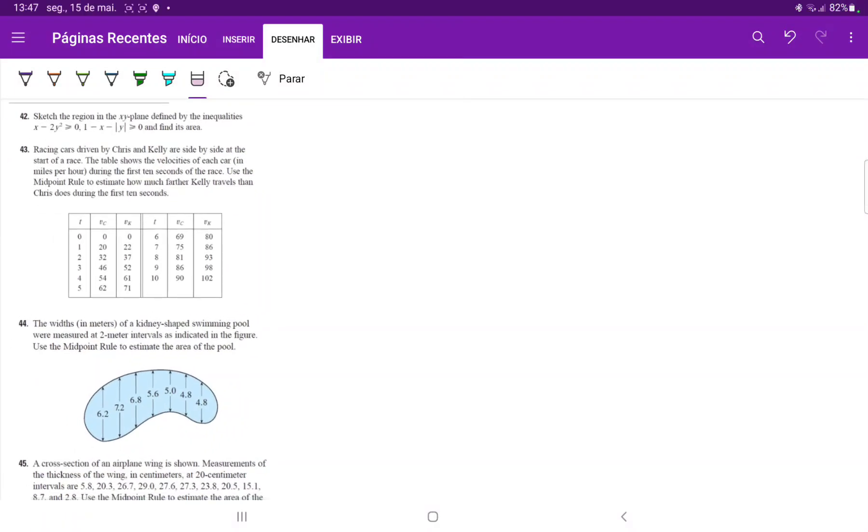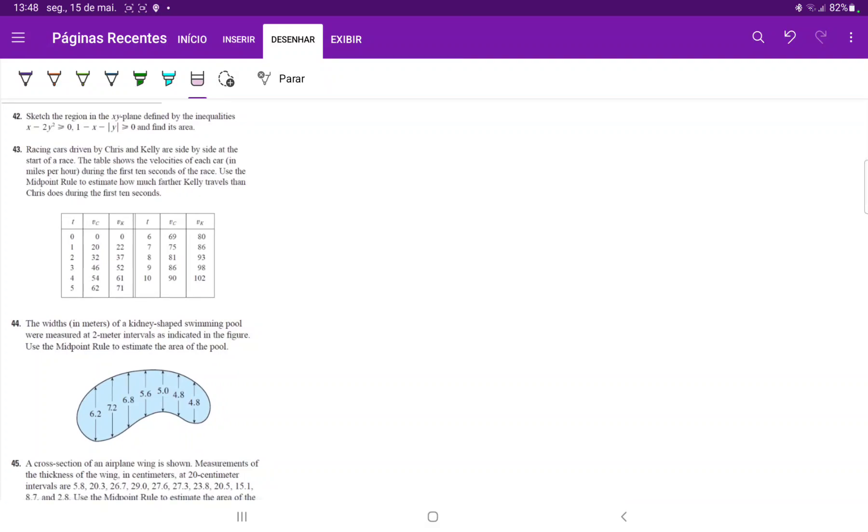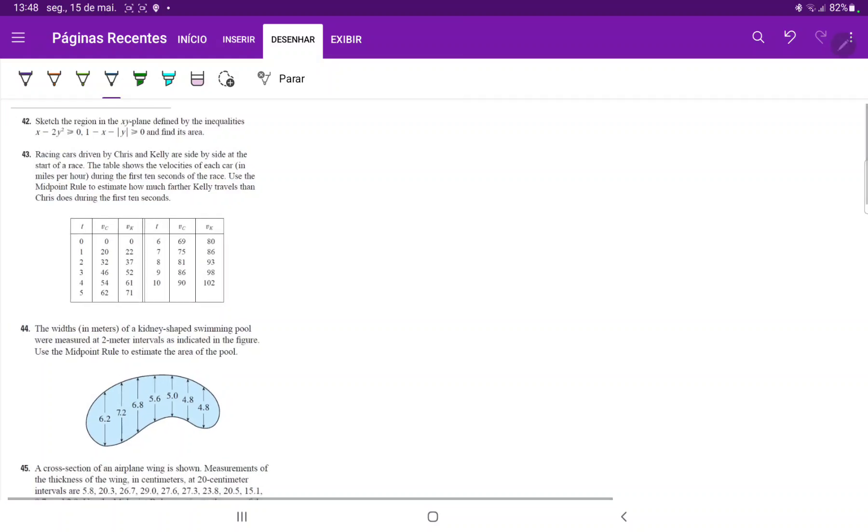For number 43, we want to find how much further Kelly travels than Chris during the first 10 seconds. We have that velocity equals distance over time. This means that V2 minus V1 is equal to D2 minus D1 over time. When we multiply this out, we have that V2 minus V1 times time is equal to D2 minus D1, which is what we want.